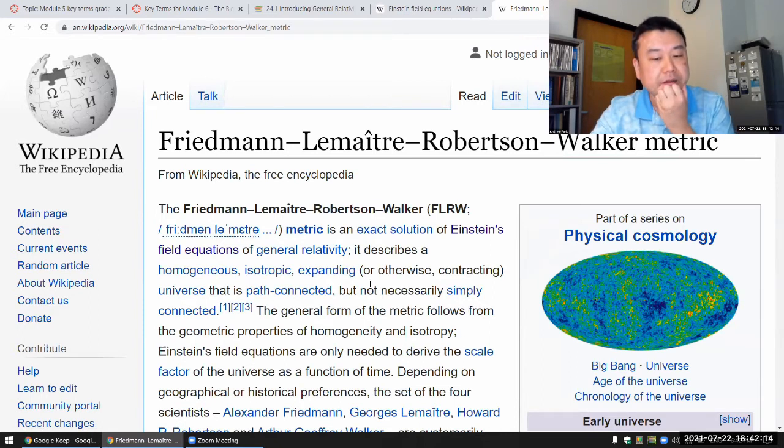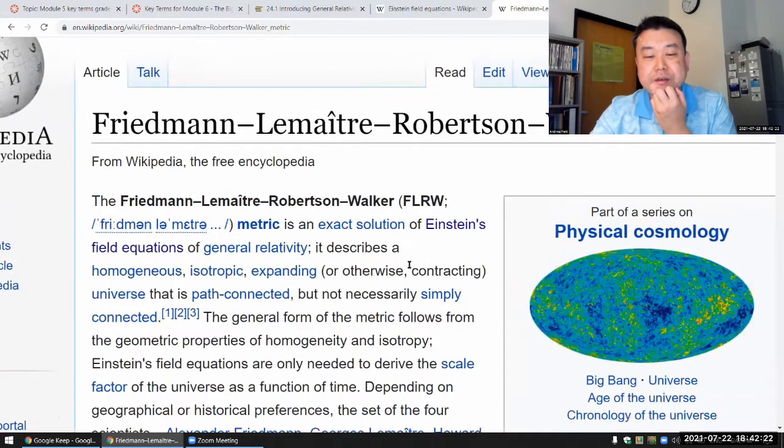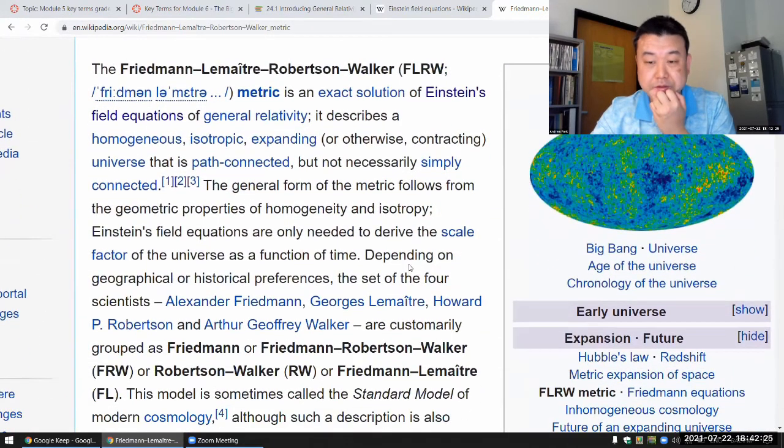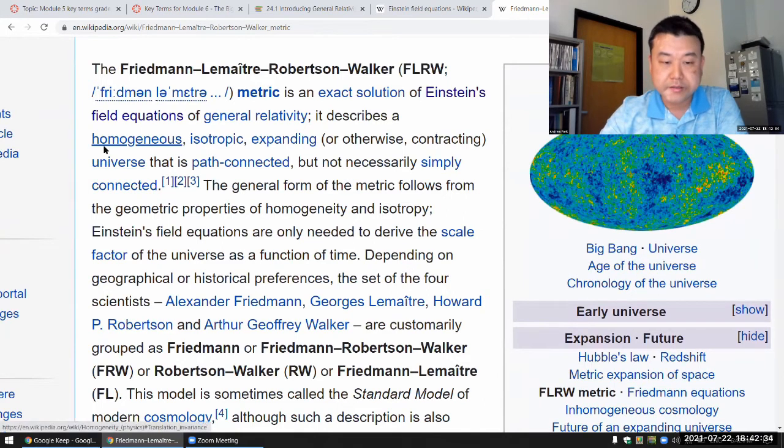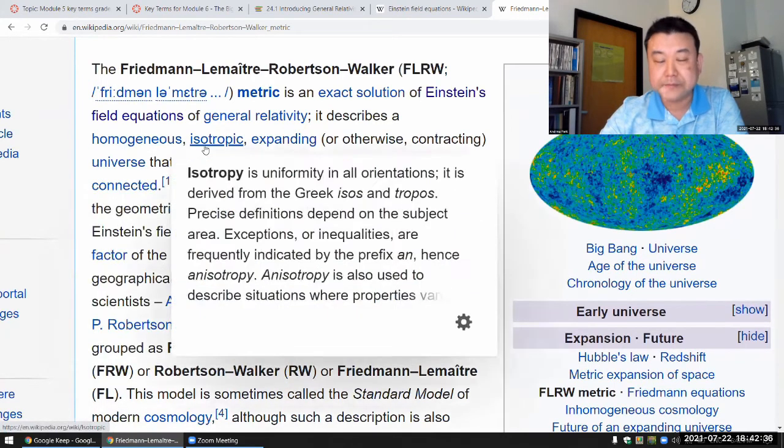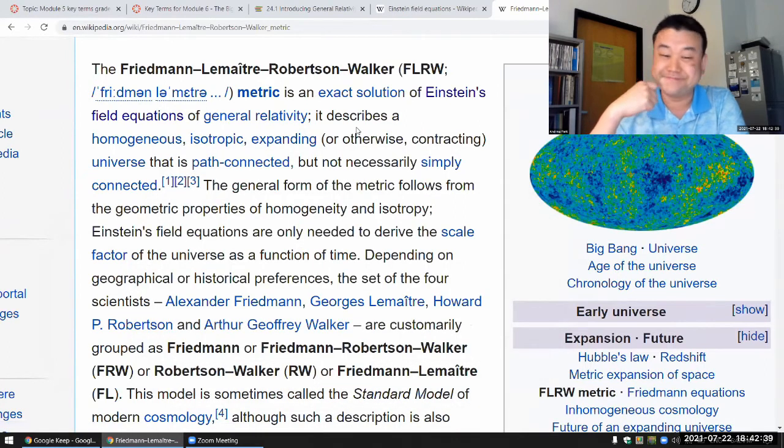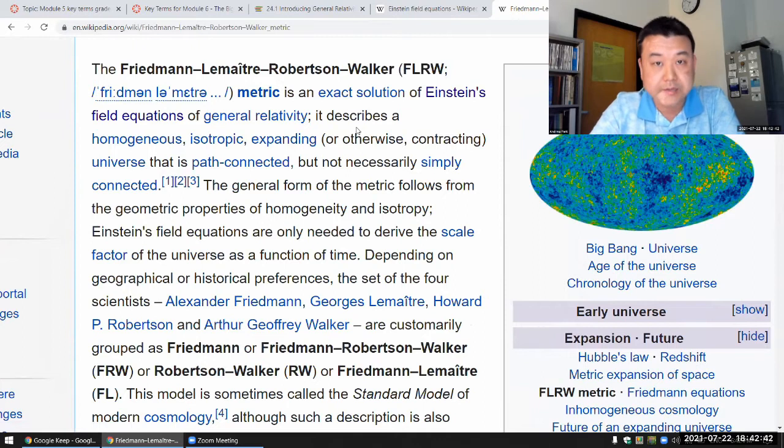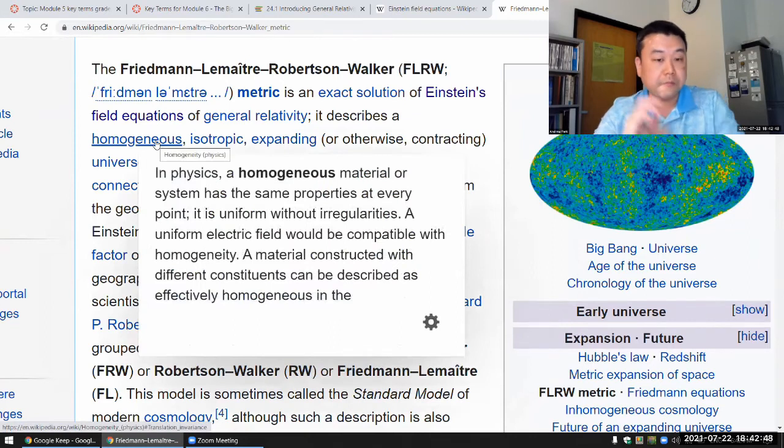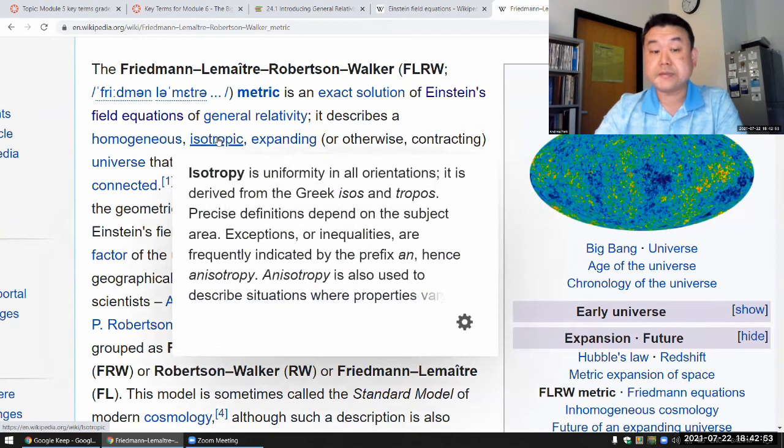Now, because the field equations are quite complicated, in order to obtain an exact solution, they have to make quite a bit of simplifying assumptions. So they assume that you got some matter and density of energy that's homogeneous and isotropic. See if that sounds familiar. That's what we described our universe as under cosmological principle.